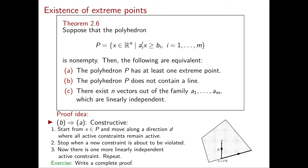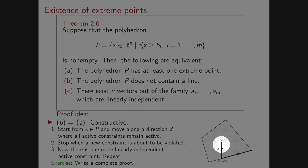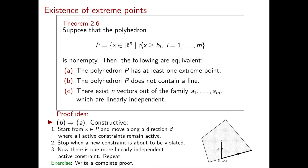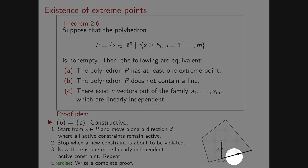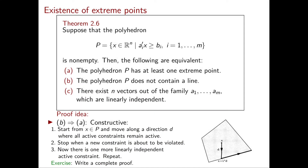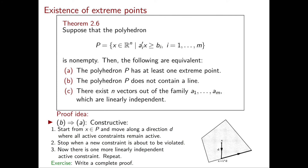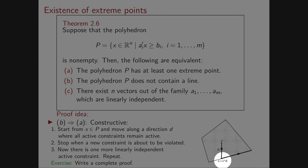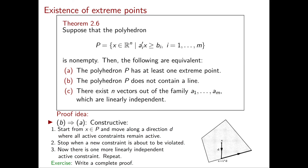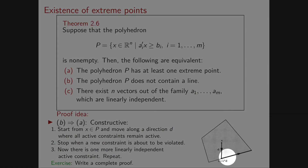We follow a direction that leads us out of P, continuing until just before leaving — obtaining the point x + λ*d. At this point there is one new active constraint. We then repeat: starting from x + λ*d we choose a new direction, but this direction must keep all currently active constraints active. Since P doesn't contain a line, in at least one of the two allowed directions we will eventually leave the polyhedron.